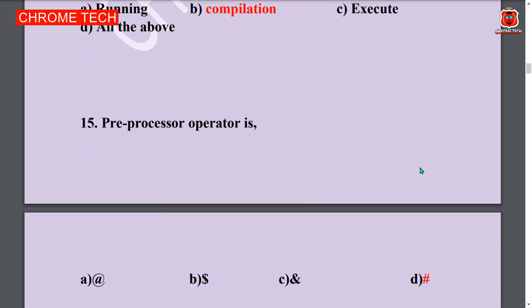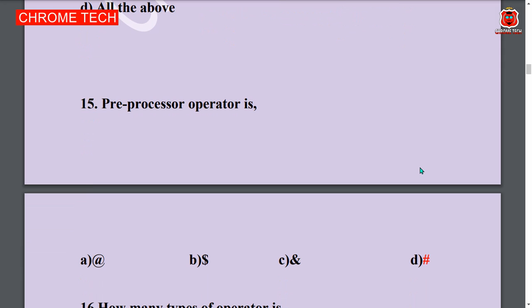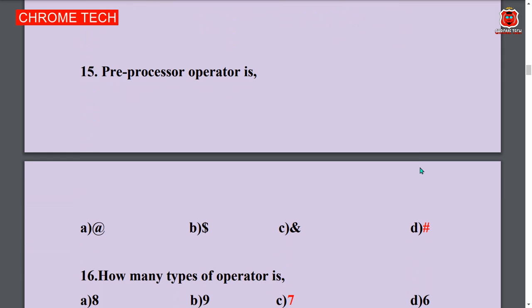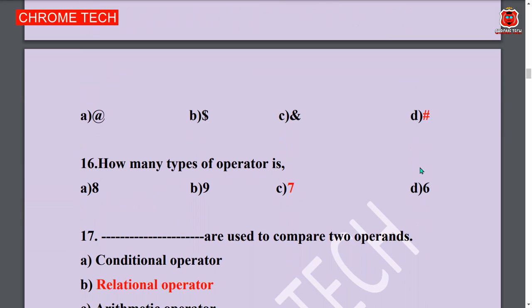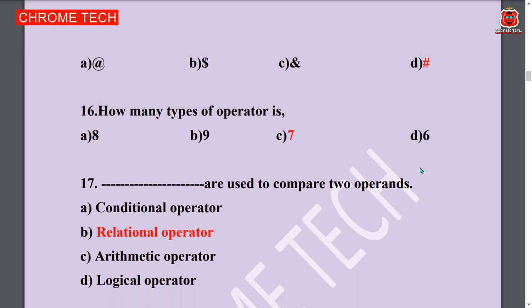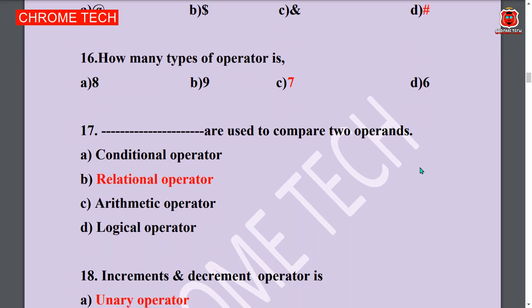Fifteenth question: Preprocessor operation is dash. Option D is the answer. Sixteenth question: How many types of operators? Seven types. Option C is the answer.